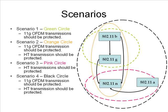Let's look at scenario one, indicated by the green circle in the adjacent diagram. This scenario is not valid for recent deployments since 11b devices are hardly available in the market and are hardly manufactured by any vendors. However, this type of network persists in older deployments. In this case, 11g transmissions should be protected since 11b cannot decrypt OFDM transmissions.